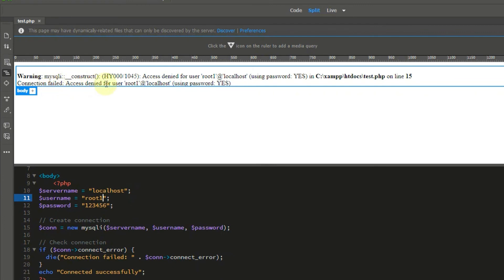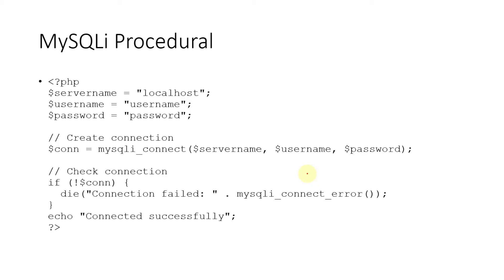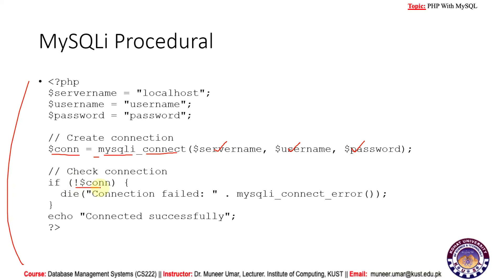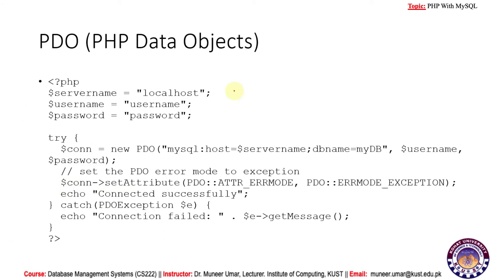You can also use MySQLi procedural code to connect a database. This code is similar to the previous object-oriented code with some minor changes. In OOP we used the MySQLi class with the new keyword to create an instance; here we use mysqli_connect(), which is a function that also takes three parameters and returns a value to conn. Inside the if statement there are also some minor differences. You can use either of these two approaches.